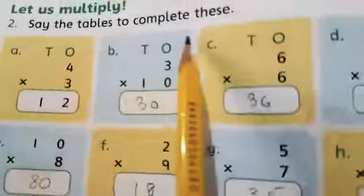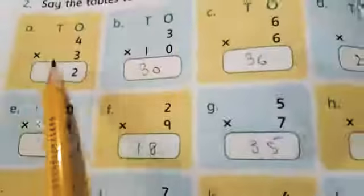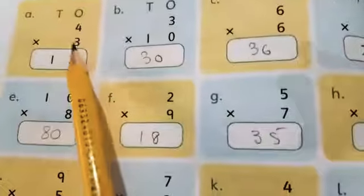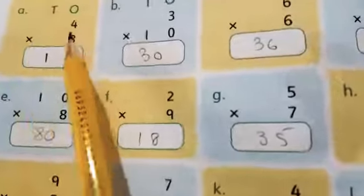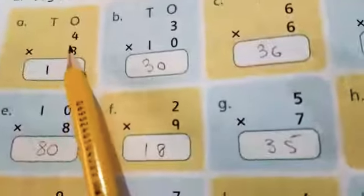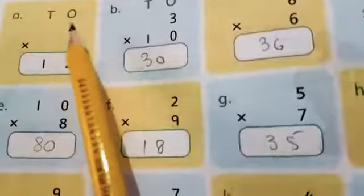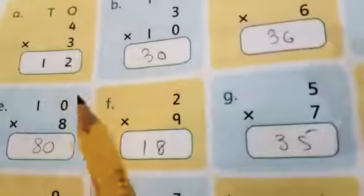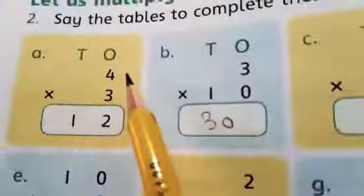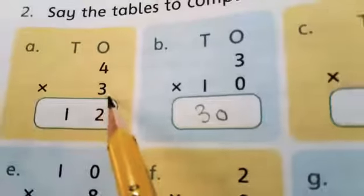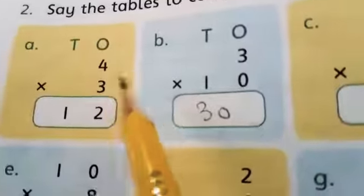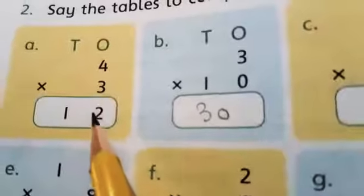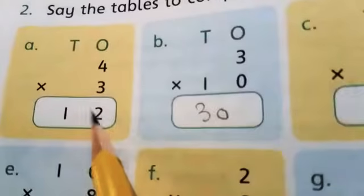Say the tables to complete these. In part A, 10s and 1s. In 1s place, 3 multiply 4 or 4 multiply 3. Students, you know, whether we say 3 times 4 or 4 times 3, the answer is the same. Start with me: 3-1 is 3, 3-2s are 6, 3-3s are 9, 3-4s are 12. You can see the answer is 12. 2 is in 1s place and 1 is in 10s place.